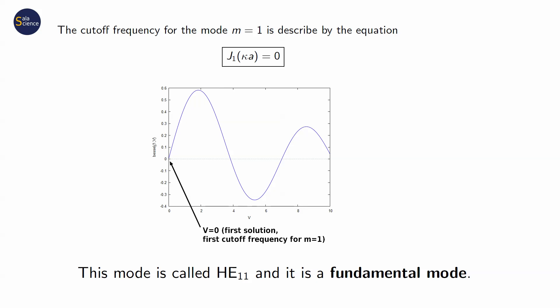It corresponds to a hybrid mode HE11. This mode is fundamental because it can be always propagated in a fiber as long as the refractive index of the core is higher than the refractive index of the cladding. The shape of the light intensity of this mode is very characteristic. It has a single maximum. It looks like a Gaussian beam, but in fact it is a Bessel function.